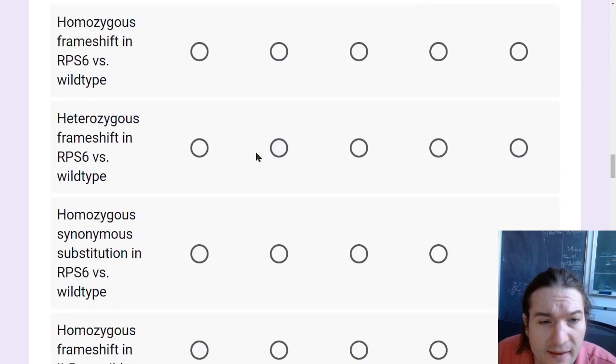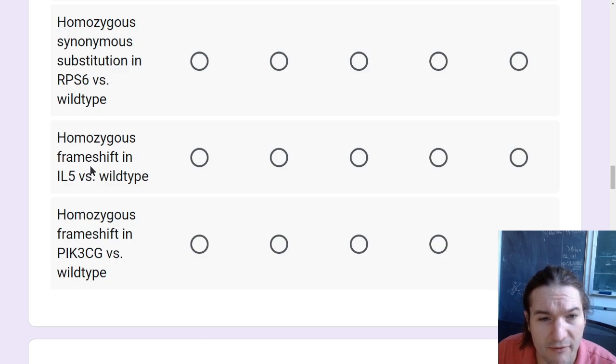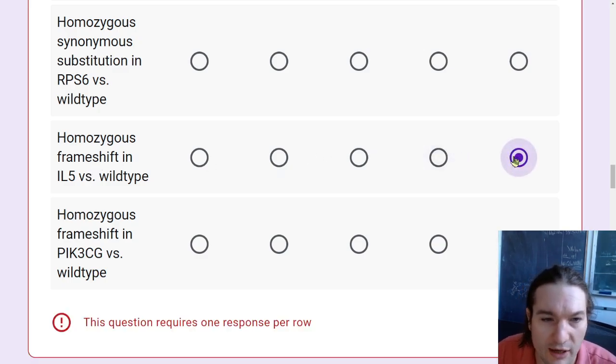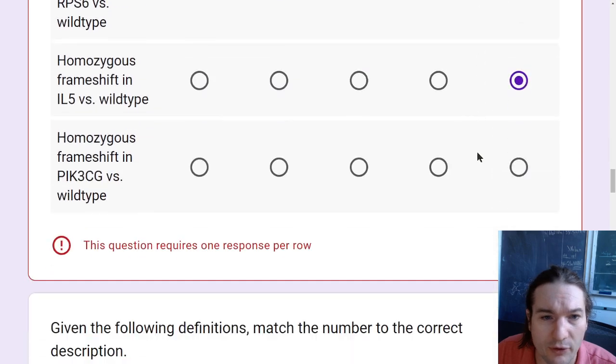So from the highest, anything that is going to affect that very high level, so like a frameshift mutation, is going to be our absolute highest.